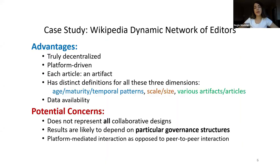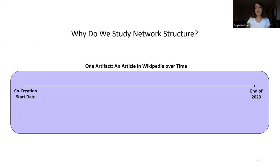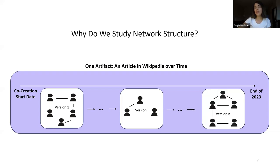The first step is to study the structure of a network. We use the Wikipedia network of editors as our case study because it's truly decentralized and platform-driven. Each article can be used as one artifact, which has its own age and scale, and the data is available. Wikipedia editors' network is a testament to a global decentralized co-creation team. We consider one artifact as one article in Wikipedia over time — each six-month version of the artifact is created by different people in different team structures.